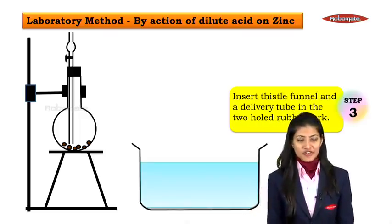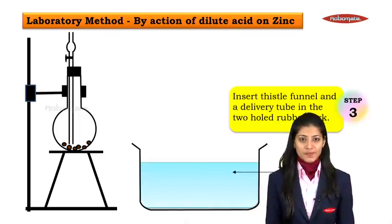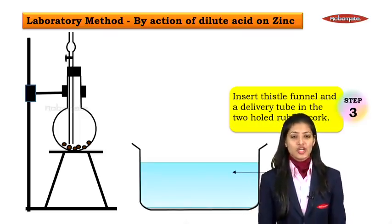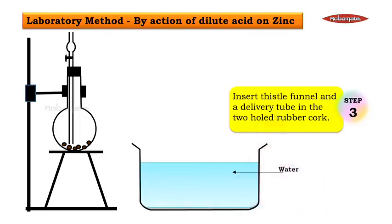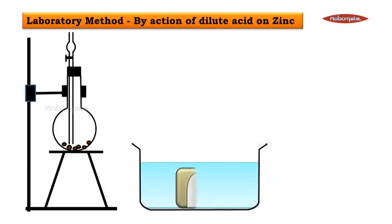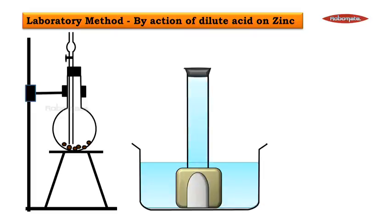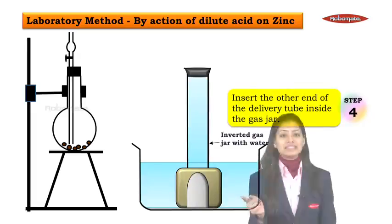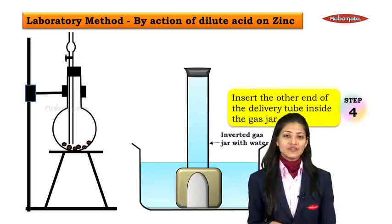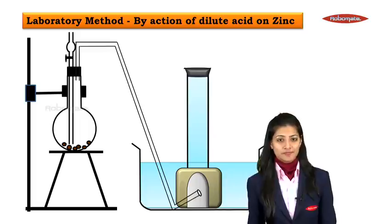We have a tub which is filled with water, inside which we are going to place an inverted gas jar attached to the beehive shelf. Insert the other end of the delivery tube into the gas jar.